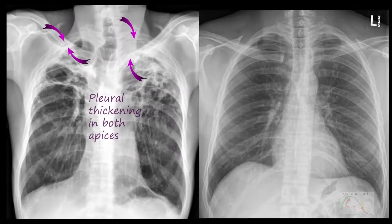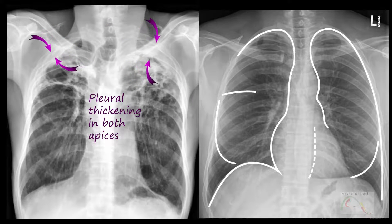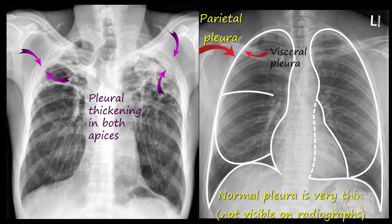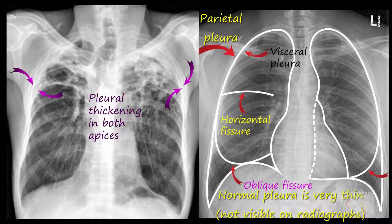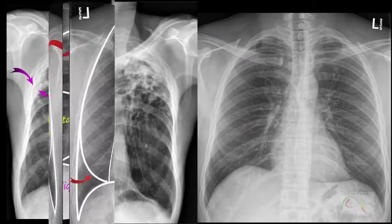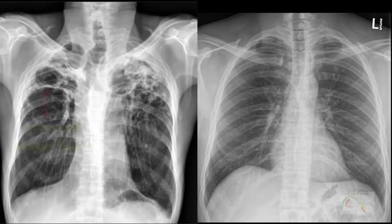There is thickening of the pleura in both upper zones. You can see multiple nodular densities in both lungs. This is the horizontal fissure that has been pulled up.